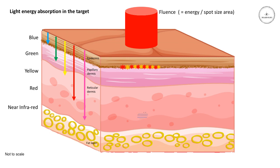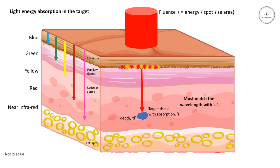If we have a target somewhere in the dermis at a depth D, some of the light energy will reach this target. The target has an absorption coefficient A, and what we have to do is try to match the wavelength with the absorption coefficient. If we can do that correctly, we will maximise the amount of energy absorbed by that target relative to the surrounding tissues, creating a localised hotspot in the target — hopefully without damaging the surrounding tissues. This is the principle of selective photothermolysis.